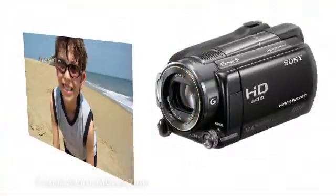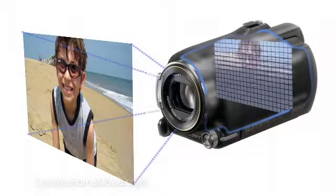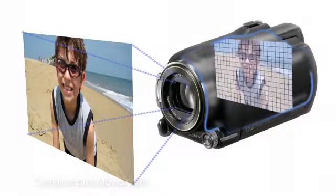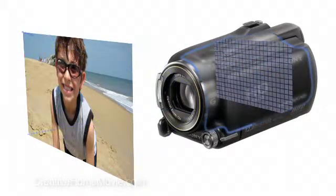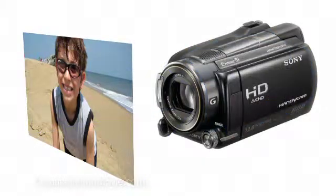A camcorder uses a lens to focus light onto an electronic plate. The plate has tiny light-sensitive zones that in turn translate the color and intensity of light into a video signal. When we're talking about the resolution of your camera, we're talking really about the number of individual picture elements that make up the image.